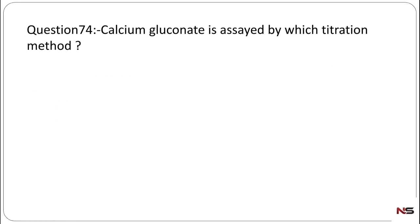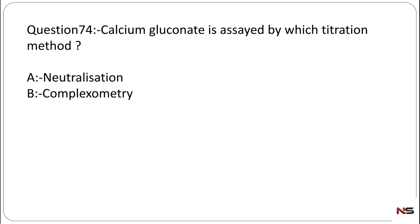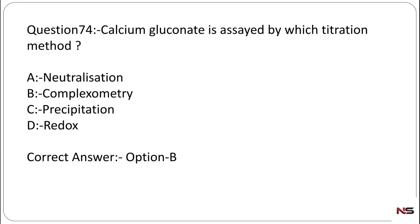Question number 74: Calcium gluconate is assayed by which titration method? Options: neutralization, complexometry, precipitation, or redox. The correct answer is complexometry.